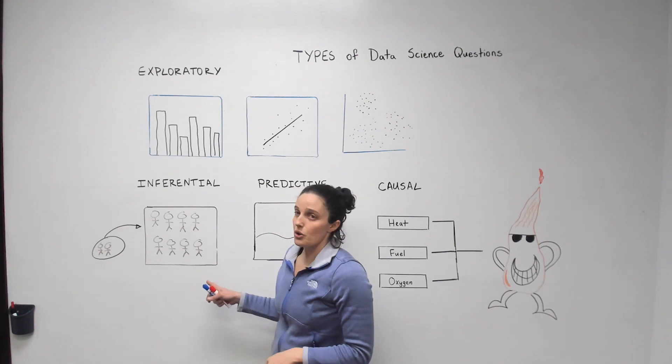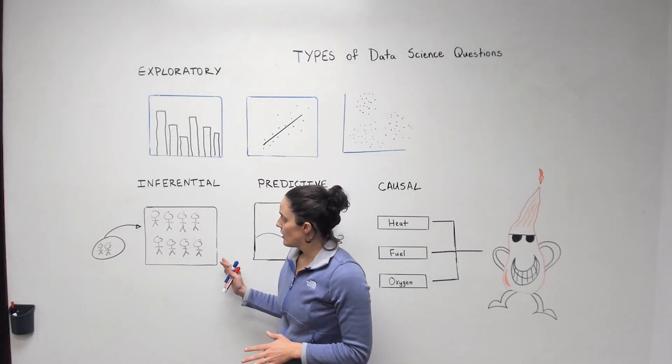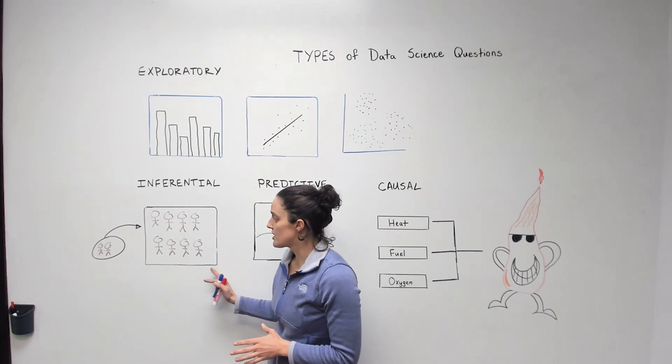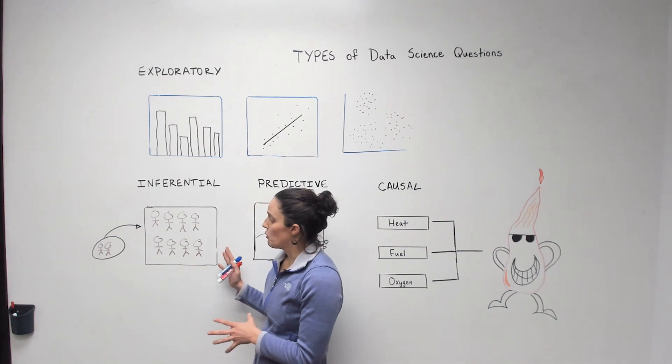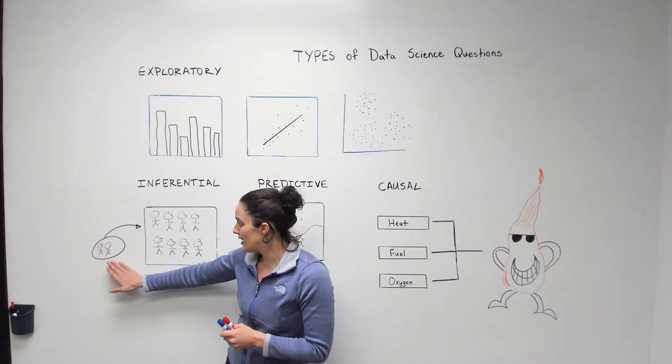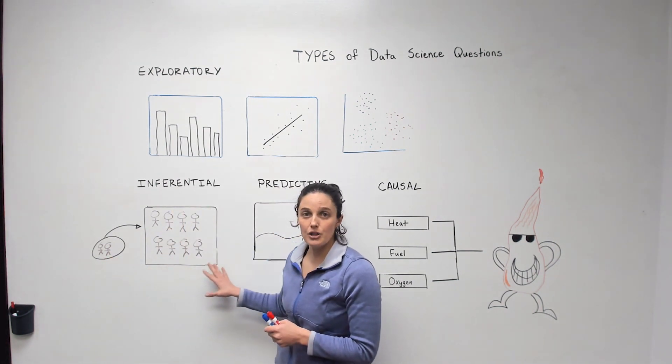Another one is inferential questions. This is all about trying to extrapolate or understand a larger population based on what we discover about a smaller population. In this form of question, it's really important to have a good sub-population that properly represents what you want to get out of the larger population.